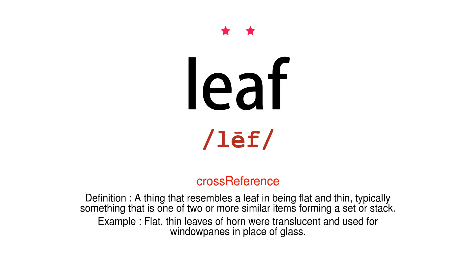Cross-reference. Definition: a thing that resembles a leaf in being flat and thin, typically something that is one of two or more similar items forming a set or stack. Example: flat, thin leaves of horn were translucent and used for windowpanes in place of glass.